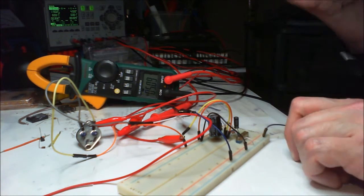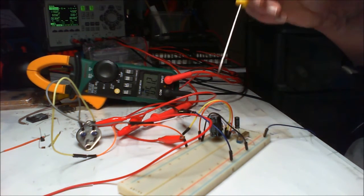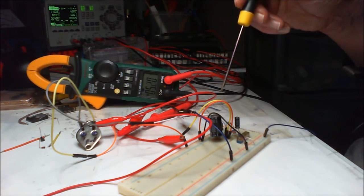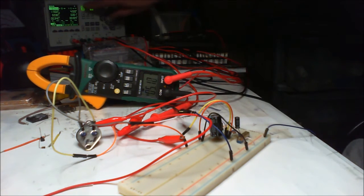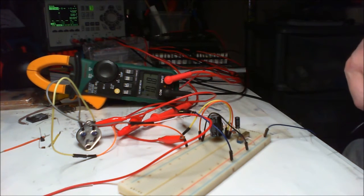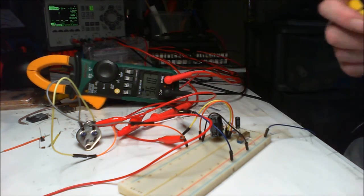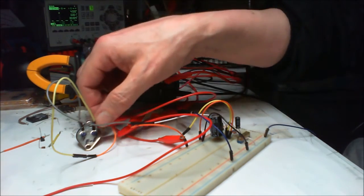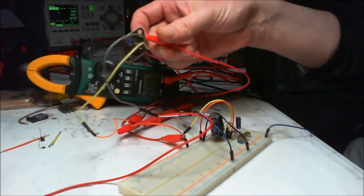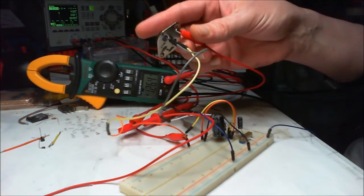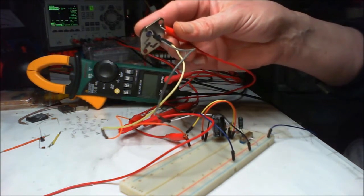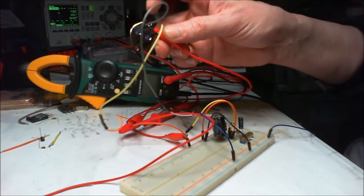You can use your standard fixed voltage regulator as a variable regulator, and you can bypass the 1.5 amp limit by putting a pass transistor on the input and output.